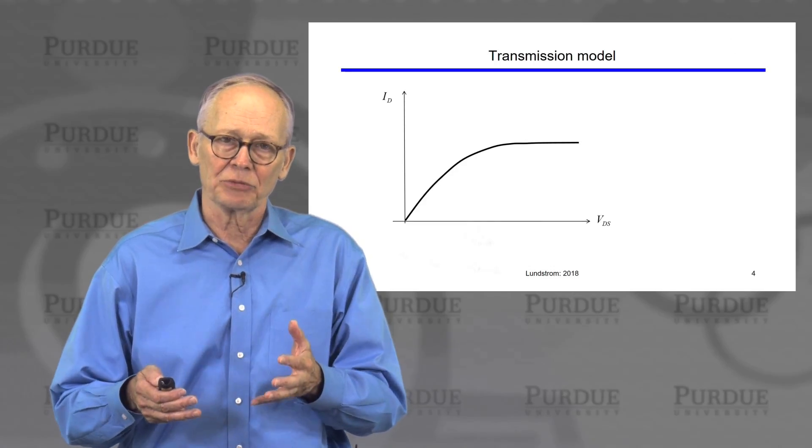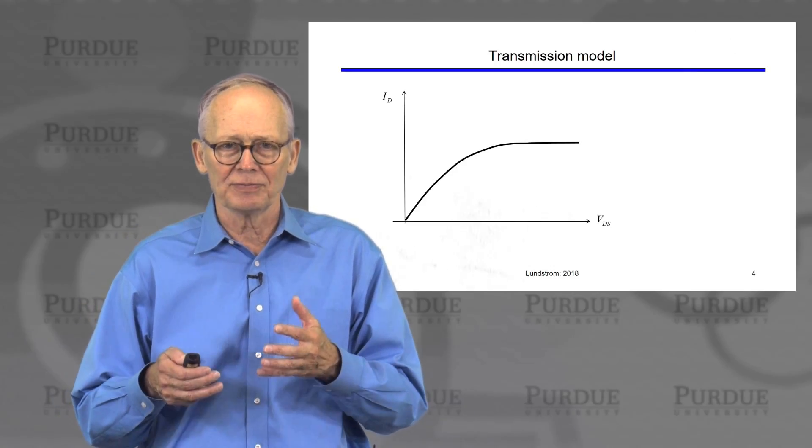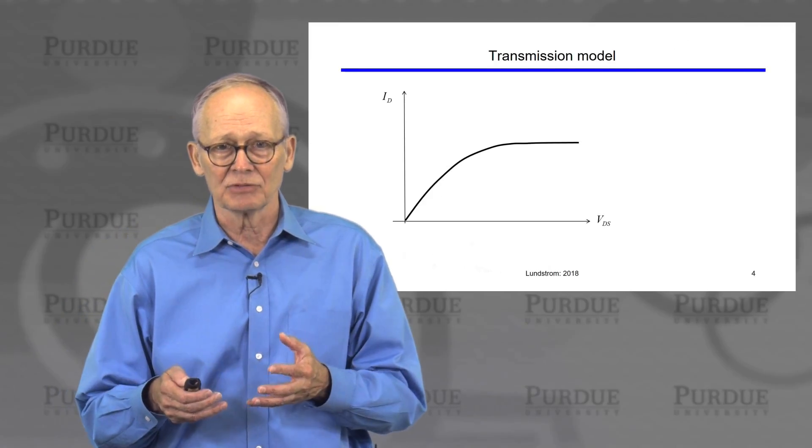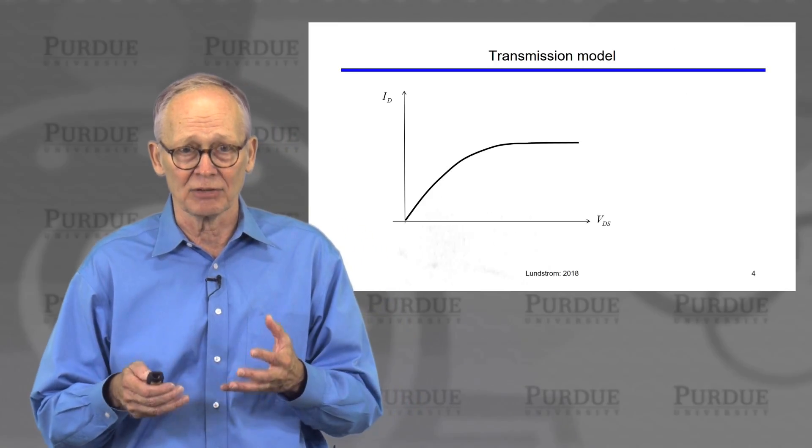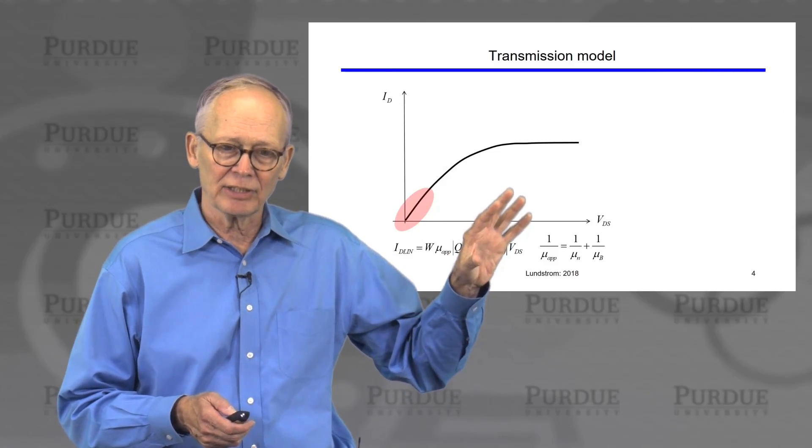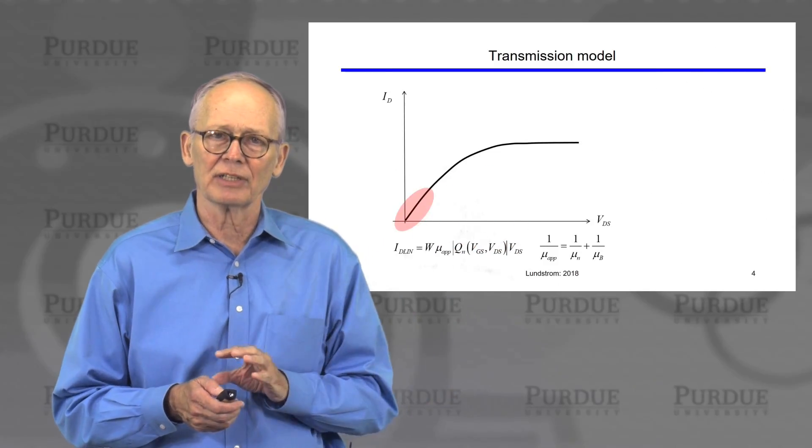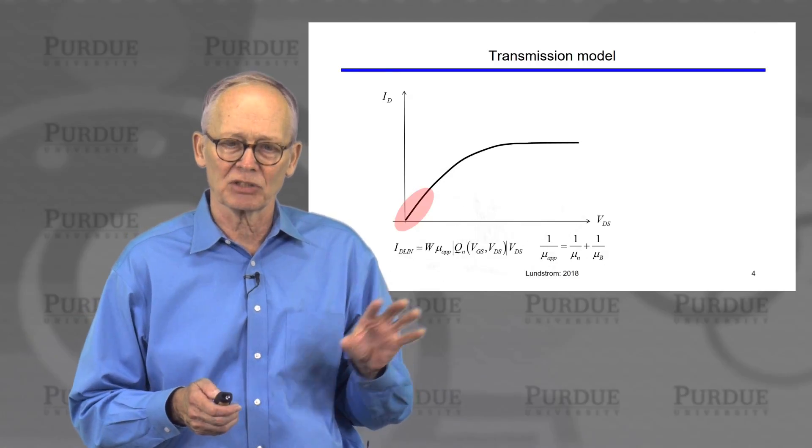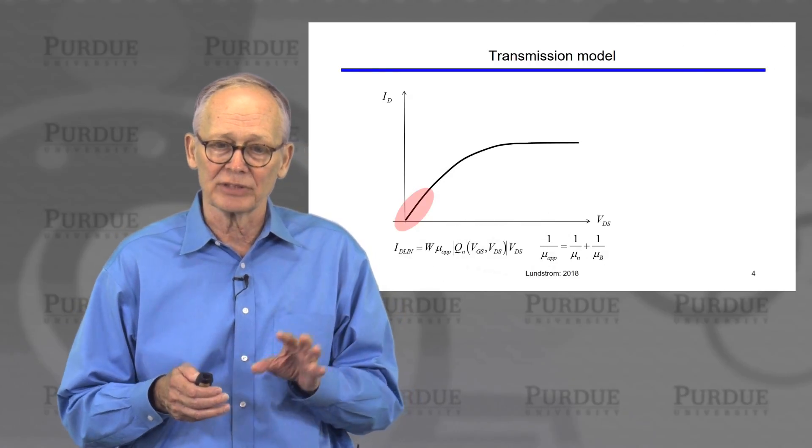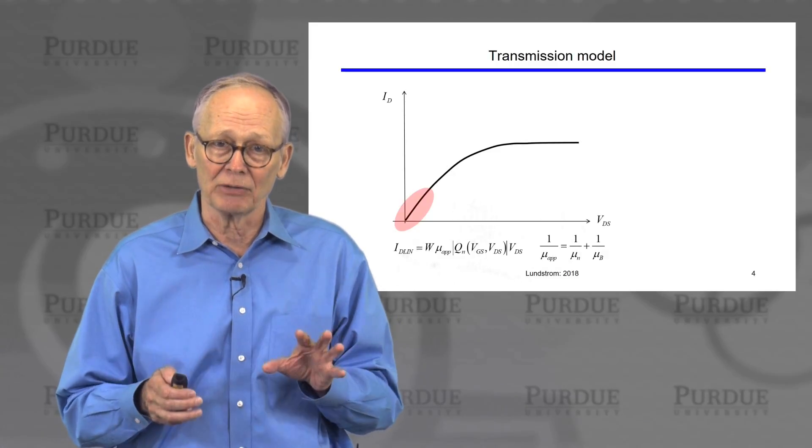We then moved on to the transmission model, which gives us a much sounder physical basis for understanding electron transport in short channel MOSFETs. We described the linear current and we wrote the linear current in a way that it looked very much like the traditional current, and we could do it by introducing this concept we call the apparent mobility.